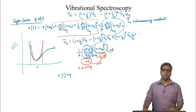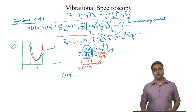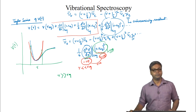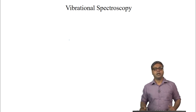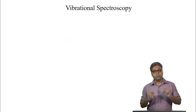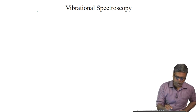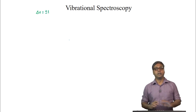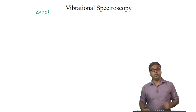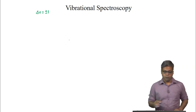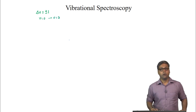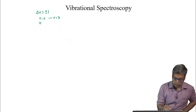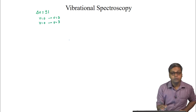Let us now look into the effects of anharmonicity on the selection rule. Because the energy levels are getting closer and closer together, the specific selection rule given by delta V equals plus or minus 1 breaks down. This means we can have transitions from v=0 to v=2, or from v=0 to v=3.